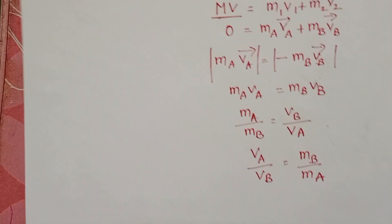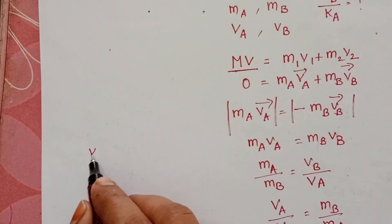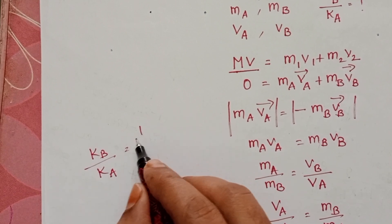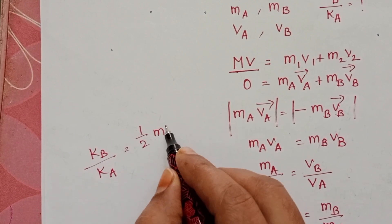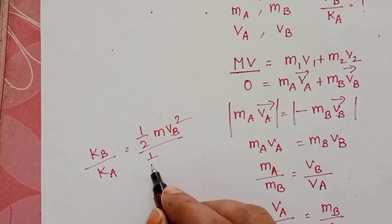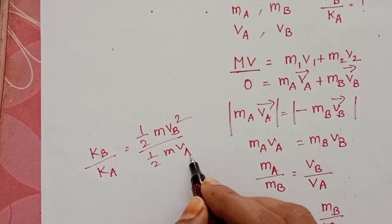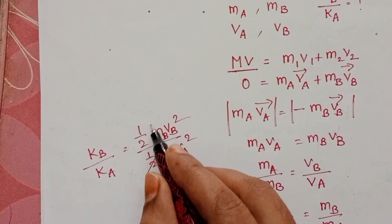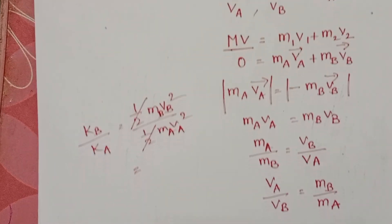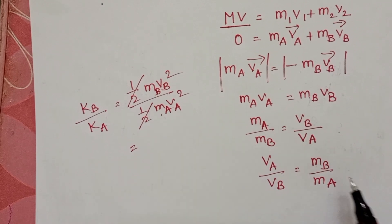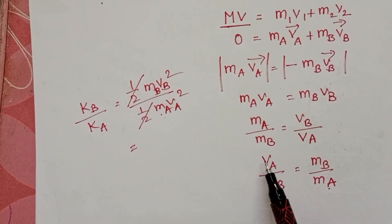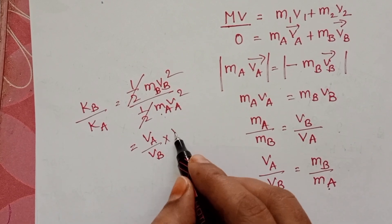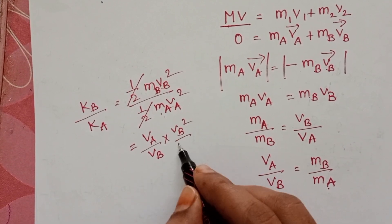Now we find the ratio of their kinetic energies: kinetic energy of the second particle to the kinetic energy of the first particle equals (½·Mb·Vb²) / (½·Ma·Va²). The ½ cancels. We substitute Mb/Ma using the velocity ratio Va/Vb, giving us Mb/Ma · Vb²/Va².